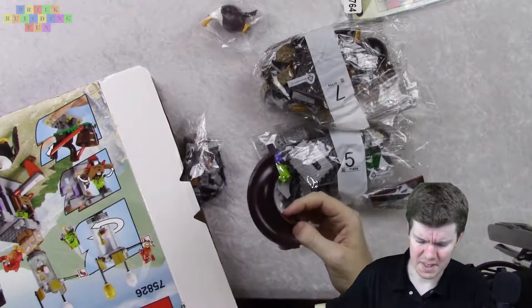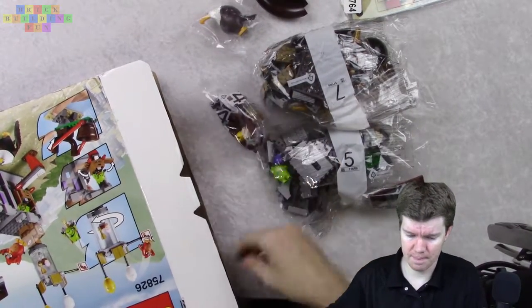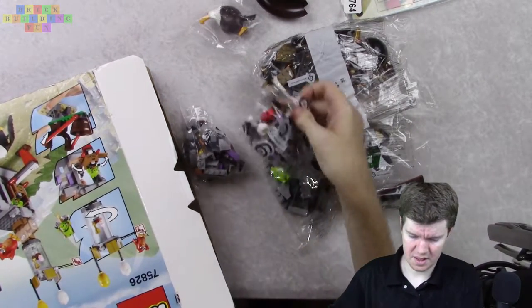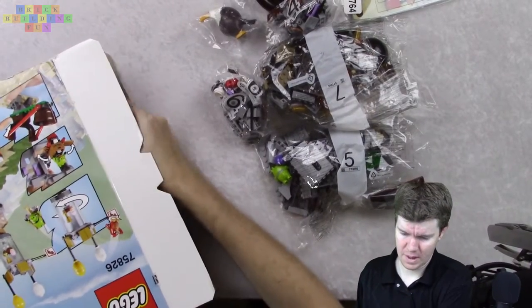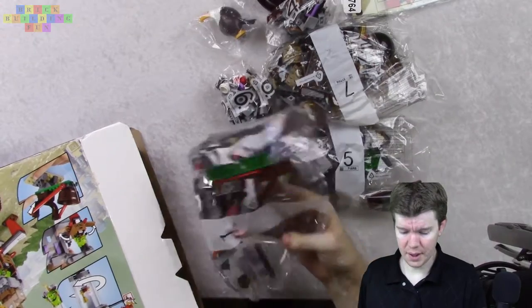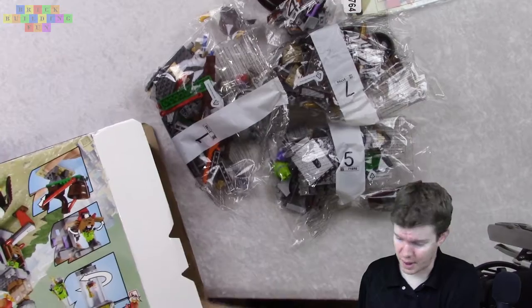So there's the slide. Hmm, it's dusty. Probably dust got in there from the box being open. Six, four, one. There's bag one. And we've got a brick separator in there.